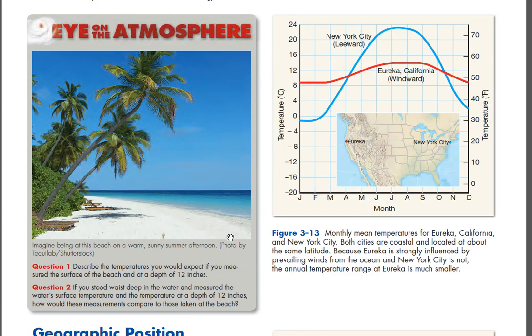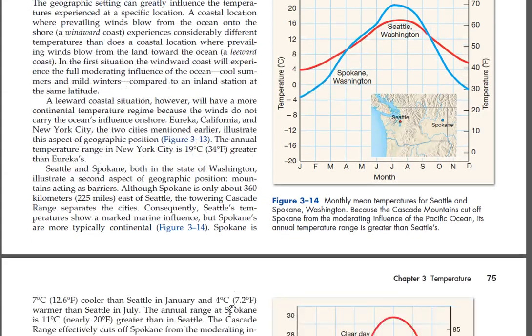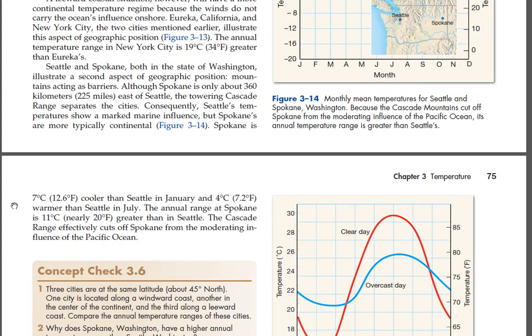Seattle and Spokane, both in the state of Washington, illustrate a second aspect of geographic position — mountains acting as barriers. Although Spokane is only about 360 kilometers east of Seattle, the towering Cascade Range separates the cities. Consequently, Seattle's temperatures show a marked marine influence, but Spokane's are more typically continental (Figure 3-14). Spokane is 7°C (12.6°F) cooler than Seattle in January. The annual range at Spokane is 11°C (nearly 20°F) greater than in Seattle. The Cascade Range effectively cuts off Spokane from the moderating influence of the Pacific Ocean.